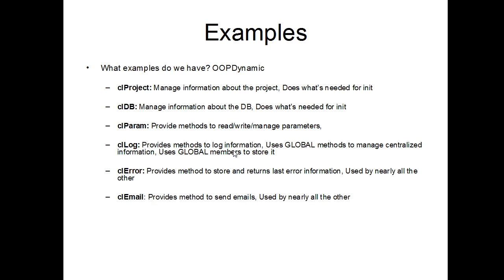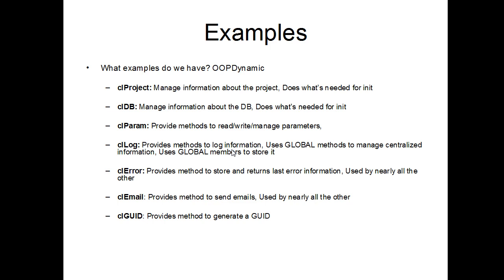There's also a CLEmail class, used to send email — nothing more than that. But it's in a class because it's going to be used by the others. CLError in particular is going to inherit from CLEmail in order to have the capability to send the content of an error information package to support, for example. There's also CLGUID, which basically provides a method to generate a GUID. Clearly a lot of these things could be just one or two methods as global procedures, but by doing them inside classes you can inherit from them, use them everywhere you have your classes — and it is, as you will see, as easy to use as regular procedural programming.